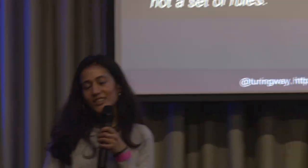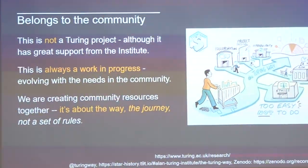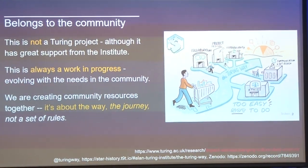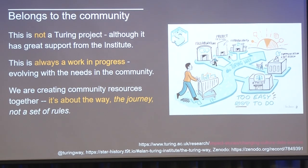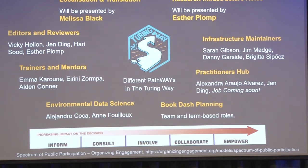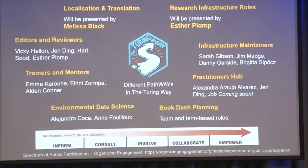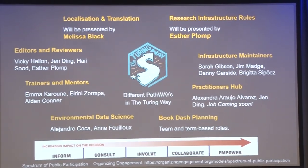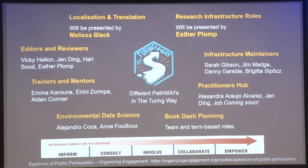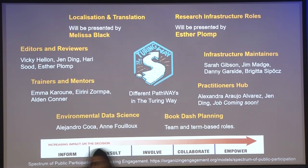Don't get distracted by the name 'Turing' in the project's name. It is not the Turing Institute's resource. It's an open source project — it belongs to the community. It is always a work in progress, evolving with the needs of the community. We are creating community process. It's not the way, but the journey that we are interested in. There are quite a lot of different ways people have built things; there's not one single right or wrong, but lots of different ideas that people have brought in and started to lead on. Our purpose is to actually move towards involvement, collaboration, and empowerment.